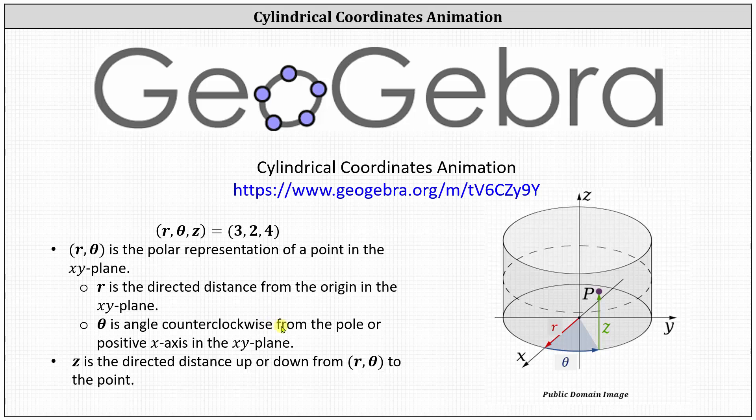Theta is the angle counterclockwise from the pole or positive x-axis in the xy-plane. On the right, theta is represented by this blue rotation from the positive x-axis. And z is the directed distance up or down from r comma theta to the point, which we see here in green on the right. Now let's take a look at the animation.